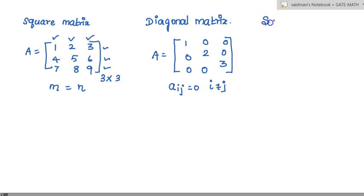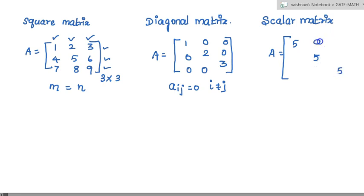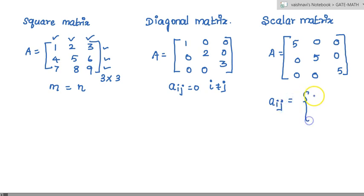The next is scalar matrix. A matrix A is said to be scalar if the leading diagonal elements are equal and the remaining all elements are zero. This can be represented as aij is equal to zero if i not equal to j, and m if i is equal to j.